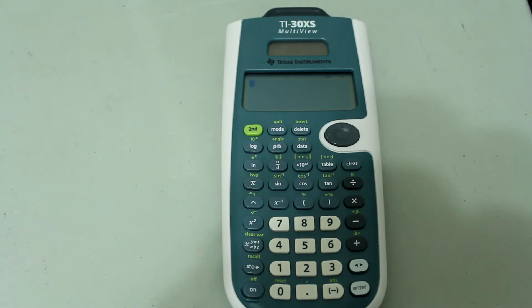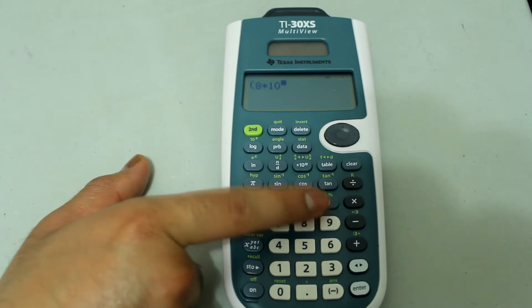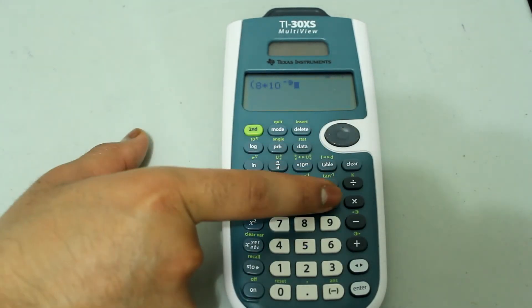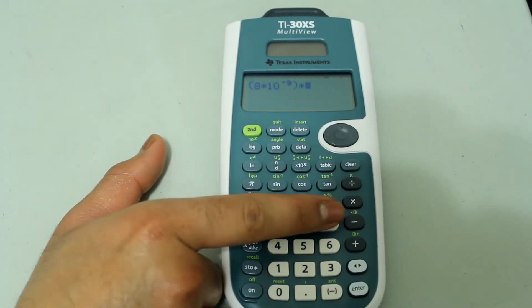Let's say for example we want to multiply 8 times 10 to the negative 9 by 9. Let's open a parenthesis, 8 times 10 to the negative 9. And then arrow over and close the parenthesis and multiply by 9.